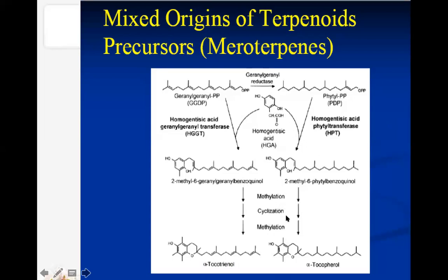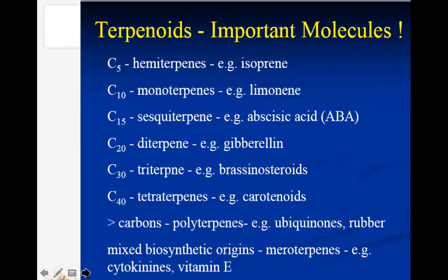Methylation, cyclization, and again methylation can take place to convert compounds to monoterpenes. Let us discuss more precisely the basic classification of Terpenoids.